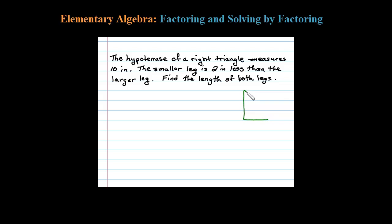We know we're working with a right triangle, which means one of the angles is 90 degrees. The hypotenuse, the longer side, measures 10 inches. Now if we let X equal the length of the longer side, then the smaller side is 2 inches less, so we'll identify that as X minus 2.